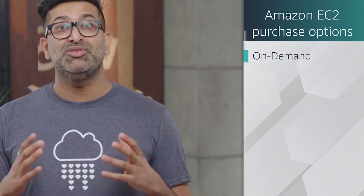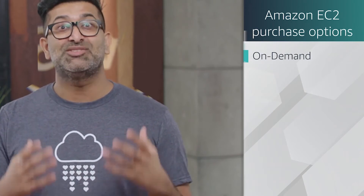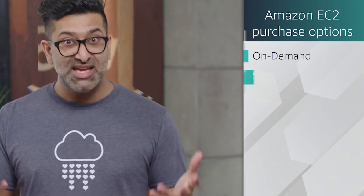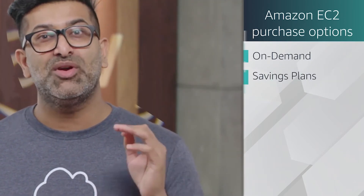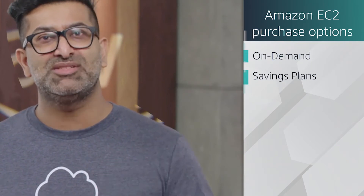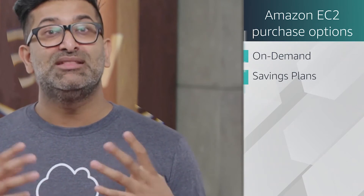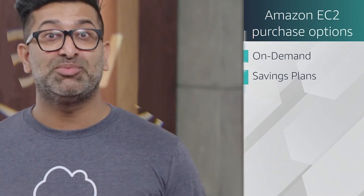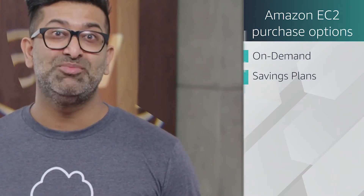You can also use On Demand to get a baseline for your average usage, which leads us to our next pricing option: Savings Plan. Savings Plan offers low prices on EC2 usage in exchange for a commitment to a consistent amount of usage measured in dollars per hour for a one- or three-year term. This flexible pricing model can therefore provide savings of up to 72% on your AWS compute usage.